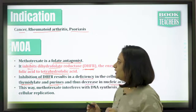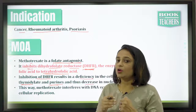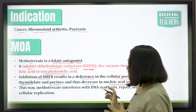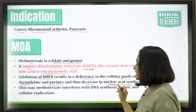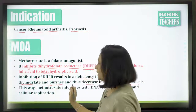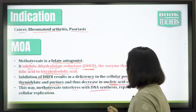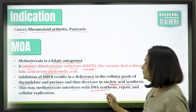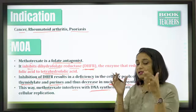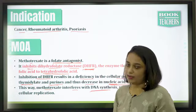So by inhibiting DHFR, folic acid will not be in its active form, and there will be no nucleic acid synthesis from thymidylate and purines. This is how methotrexate interferes with DNA synthesis — because nucleic acid and folic acid will not be available, DNA synthesis and cell replication are all going to be decreased.